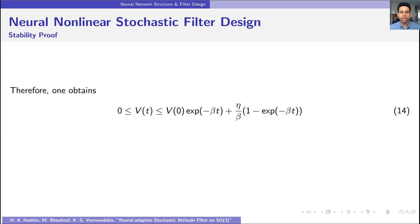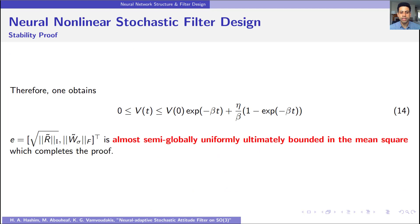Therefore, with the following results, this implies that E, or the error vector, is almost semi-globally uniformly ultimately bounded in the mean square, which completes our proof.